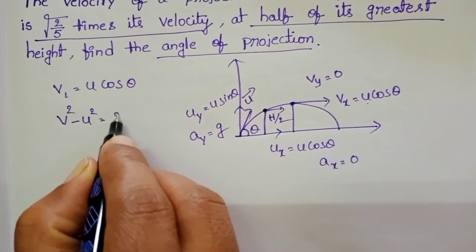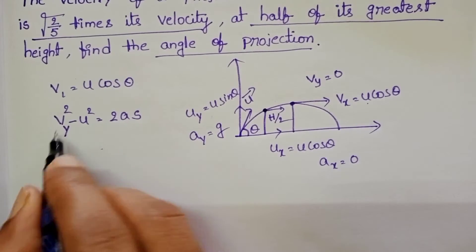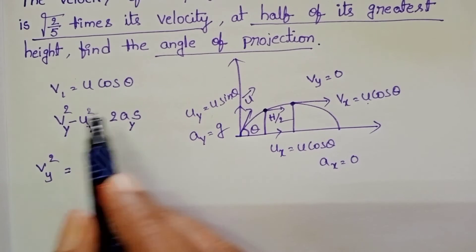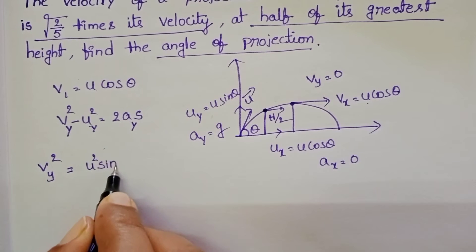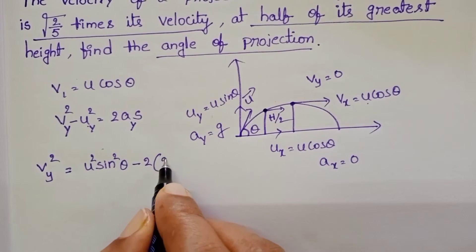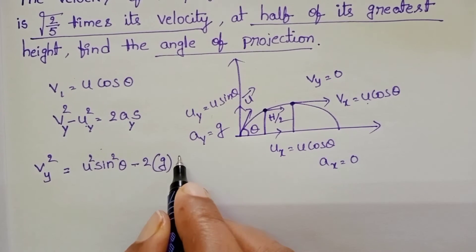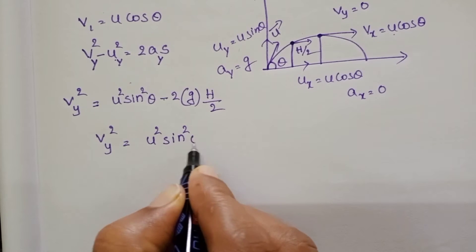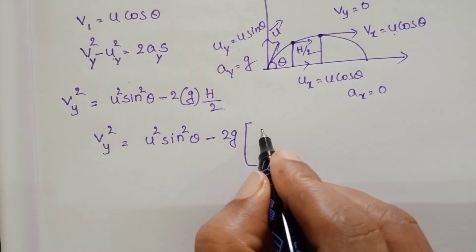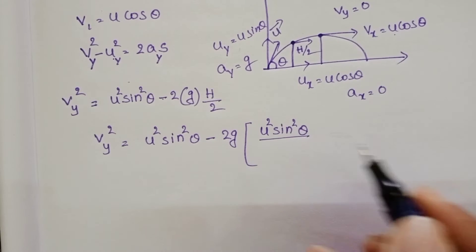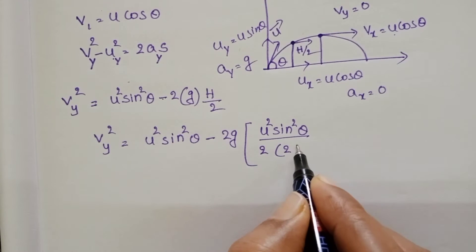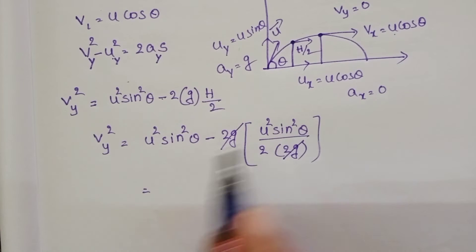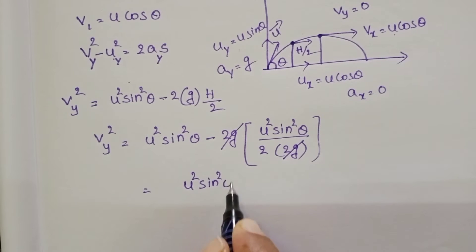Using v² - u² = 2as, for the vertical component: vy² = u² sin²θ - 2g × (h/2). Substituting maximum height h = u² sin²θ / 2g, we get vy² = u² sin²θ - 2g × (u² sin²θ / 2g). Simplifying, 2g cancels and we get vy² = u² sin²θ - u² sin²θ / 2, which gives vy² = u² sin²θ / 2.